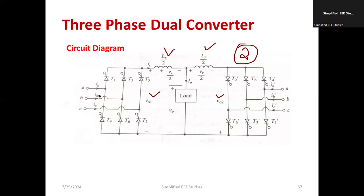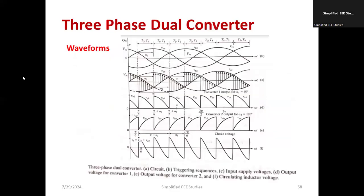Now let us understand how the 3-phase dual converter works. Supply is provided at both sides. The triggering sequence is: T5-T6, T6-T1, T1-T2, T2-T3, T3-T4, T4-T5, T5-T6, and so on.